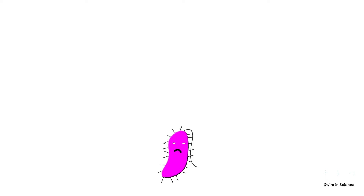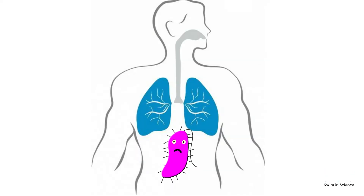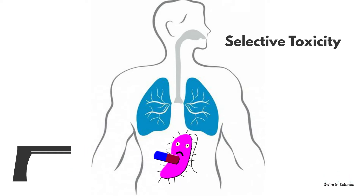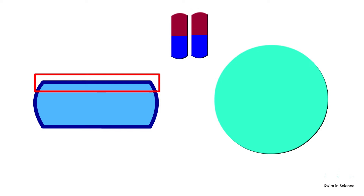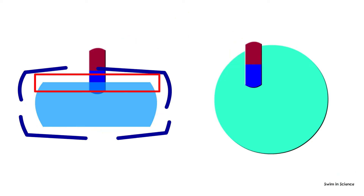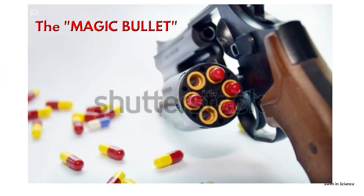The disease-causing microorganisms or pathogens are also living creatures just like human beings. So, how can you kill a pathogen that resides in the body of a human being without harming his body? Antimicrobials have a unique property called selective toxicity, with which they target and kill pathogens without harming the human body. For example, bacteria have a cell wall and human cells don't have a cell wall. So, if we design an antibiotic targeting these cell walls, they kill the pathogen without harming human cells. That is why antibiotics are often considered the magic bullets.